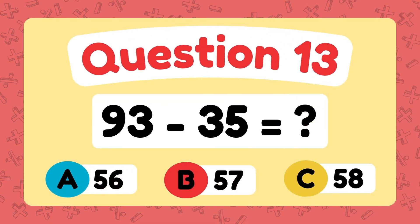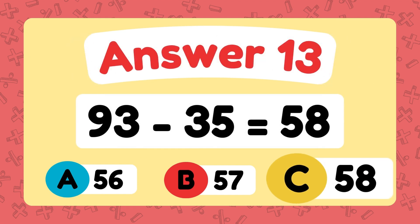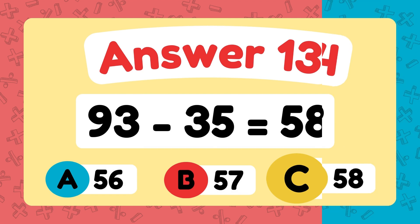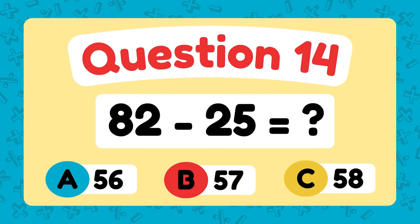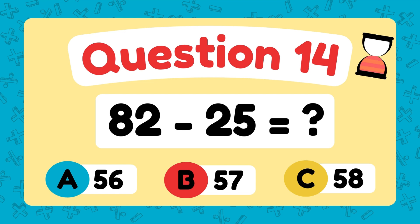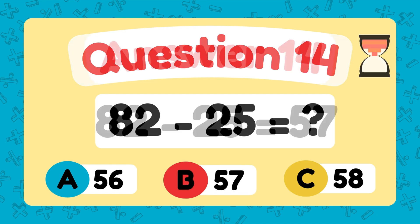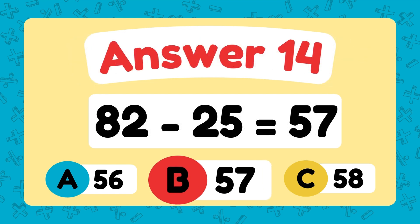What is 93 minus 35? The answer is 58. What is 93 minus 25? The answer is 58.